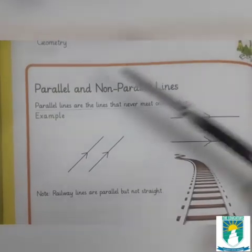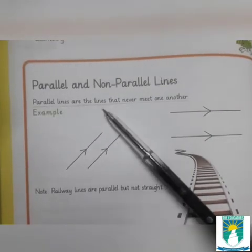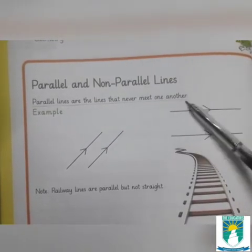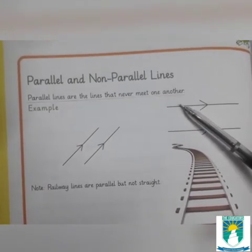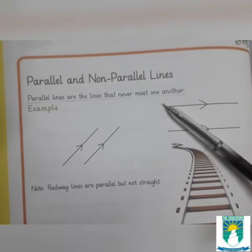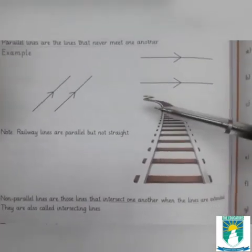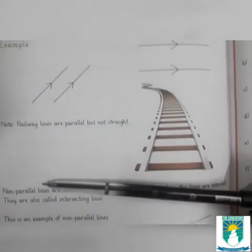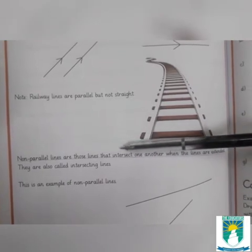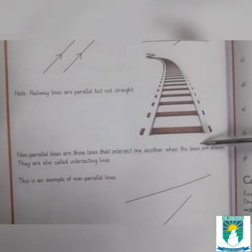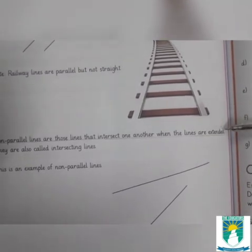Page 100: parallel and non-parallel lines. Parallel lines are lines that never meet each other. Non-parallel lines are lines that intersect each other when extended.